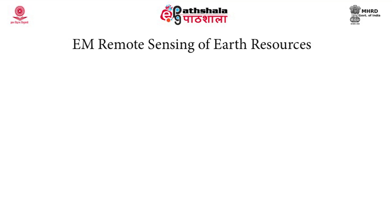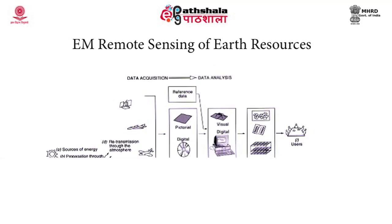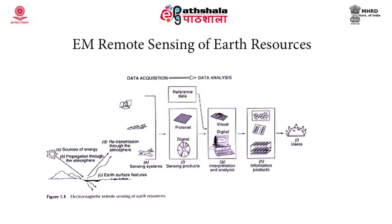This figure deals with the overall principle and the mechanism of remote sensing. First we need to have a source of energy. This is followed by the propagation of these energy radiations through the atmosphere, the processes involved therein, and then its interactions with the earth's surface features. After interaction with the earth's surface features, the radiations are retransmitted through the atmosphere to reach the sensors, which could be aerial photography or spaceborne. Overall, from source of energy to transmission through the atmosphere and reaching sensors constitutes the data acquisition stage.